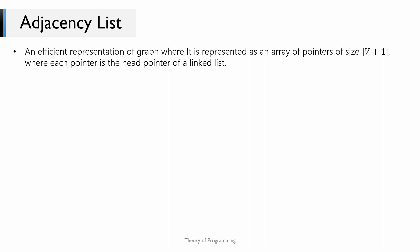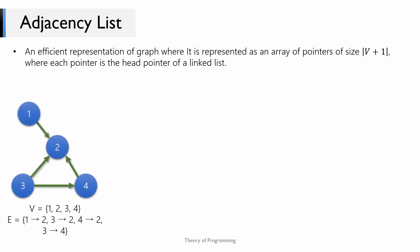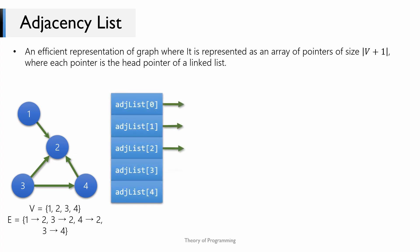Each node in the linked list will contain information about one edge in the graph. For example, consider this graph of four vertices and four edges. Since we have four vertices we would have an array of size 5 where each element is a pointer to a linked list. Take vertex 3 — it has two adjacent vertices, vertex 2 and vertex 4. So for the linked list corresponding to vertex 3, we would have two integers: 2 and 4. The node holding integer 2 denotes that vertex 2 is adjacent to vertex 3, and the node with integer 4 corresponds to the edge vertex 3 → vertex 4.